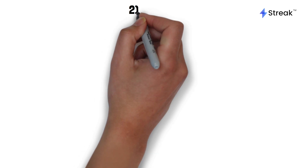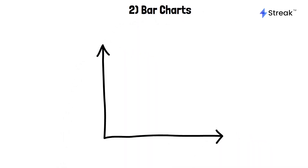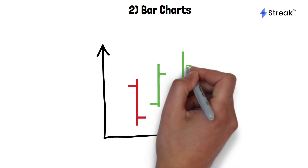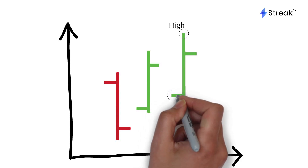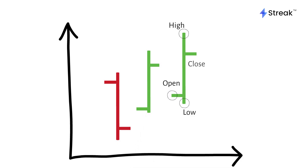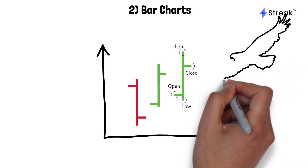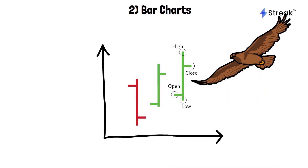With their straightforward design and interpretation, it's no surprise that line charts are a go-to choice for many traders. The second type is bar charts. Bar charts provide a more comprehensive overview of price movements compared to line charts. In addition to plotting price trends over time, bar charts also display the range of prices for the period being charted. The highest and lowest prices are depicted by horizontal lines, while the opening and closing prices are indicated by vertical lines on either end of the bar. Essentially, bar charts give you a bird's eye view of the price action within a given time frame.